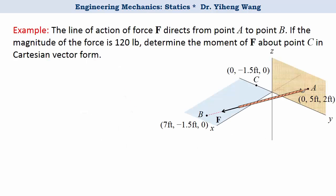Let's look at this example. We know how this force F is directed from point A to point B. We also know its magnitude is 120 pounds. We need to determine the moment caused by this force about point C in Cartesian vector form.